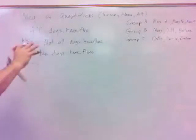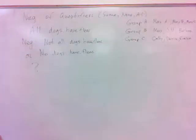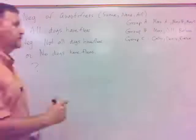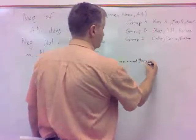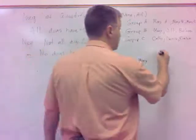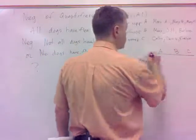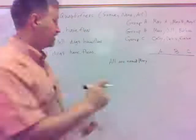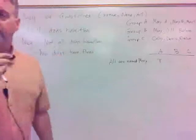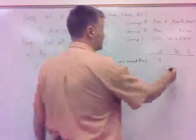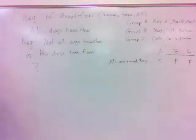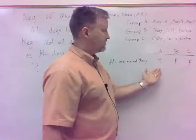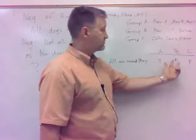We can look at some negation possibilities here. If I make the statement 'all are named Mary,' I'll look at truth values for groups A, B, and C. In group A, that's true — all of them are named Mary. In group B, are all of them named Mary? No, so that's false. And in group C, all of them named Mary? Obviously false. To be a negation of this, the truth values have to be opposite in all cases — so the negation must be false, true, true.